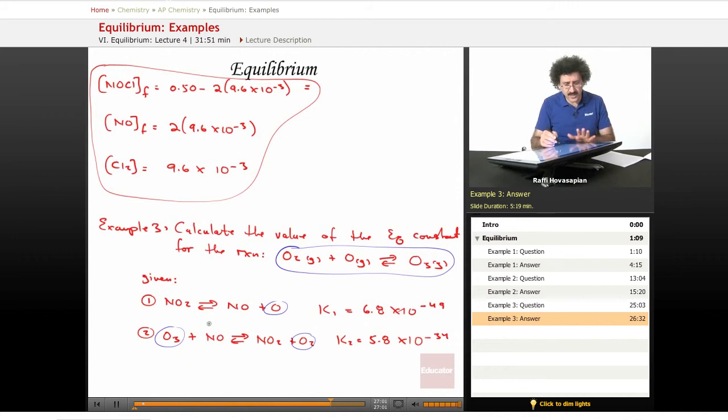In doing so, if we add all the equations together to get our final equation, when we did delta H's, when we did enthalpies, we just added the enthalpy. With K's, with equilibrium constants, it's actually different. When we add equations to get a final equation, what we do to equilibrium constants is we actually multiply them.